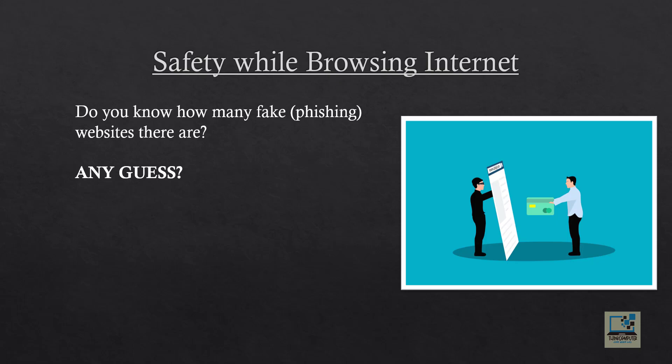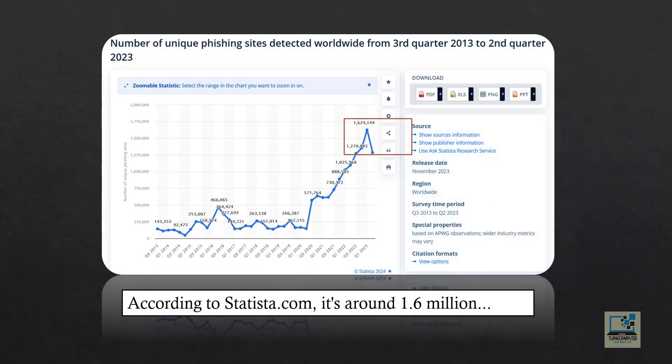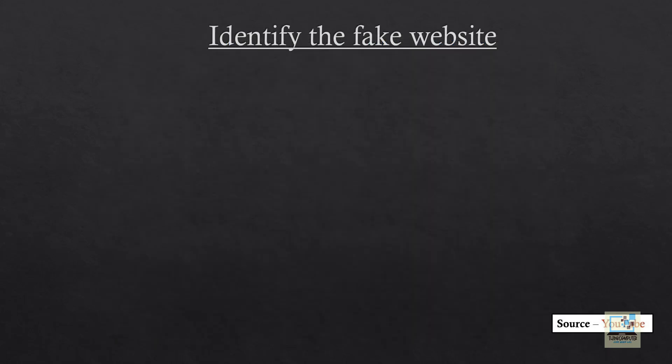Safety while browsing the internet: do you know how many fake phishing websites are there? According to Statista.com, it's around 1.6 million — that's a huge number. How do we identify a fake website? I'm going to show you two screenshots — one is a fake website and one is a genuine website. You can pause the video and see if you can guess correctly.